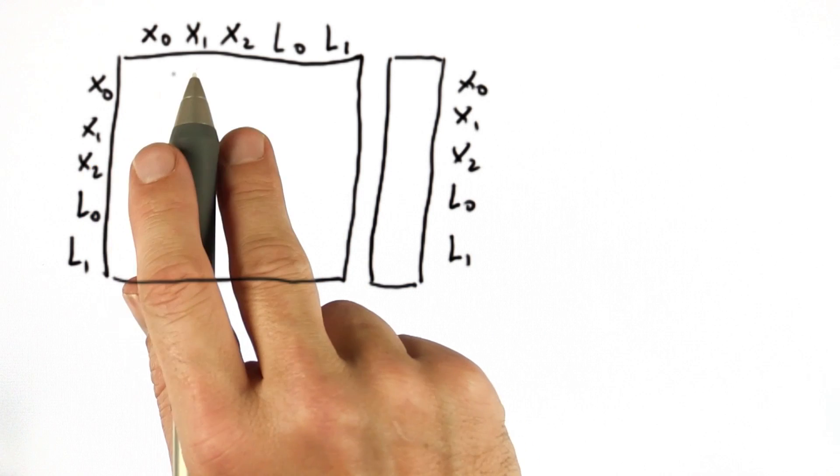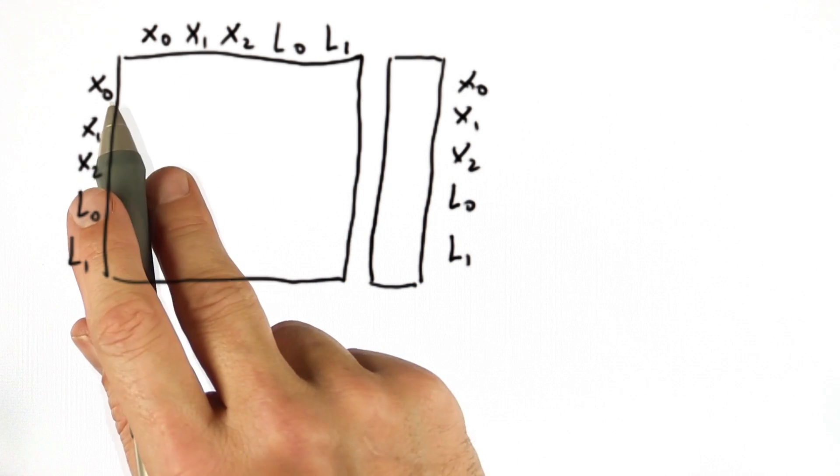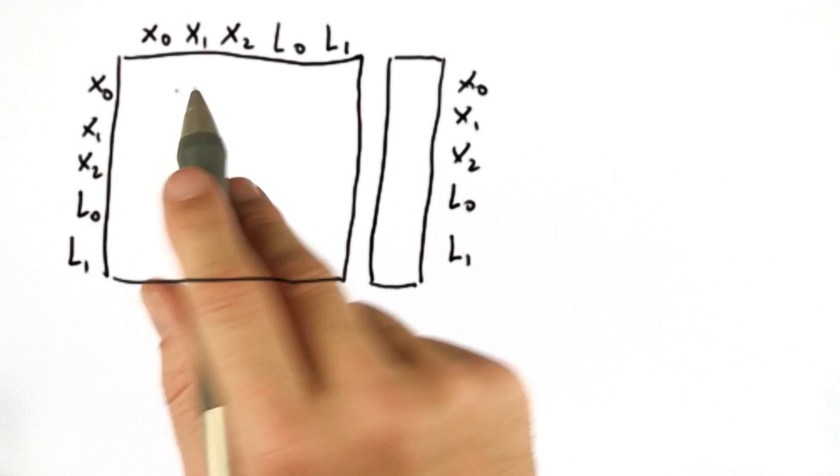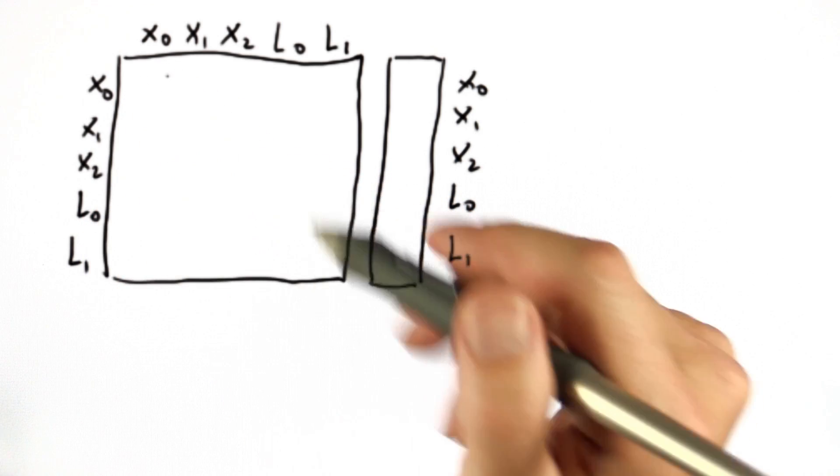And every time we make an observation, say between two poses, they become little additions locally in the four elements in the matrix defined over those poses.